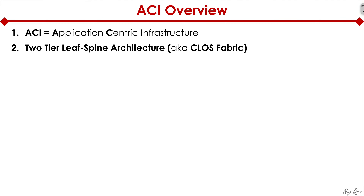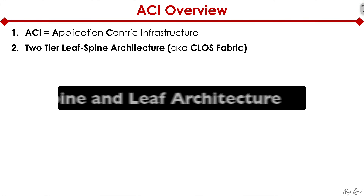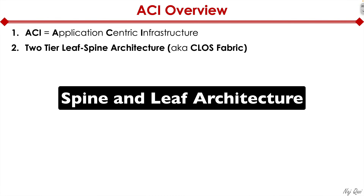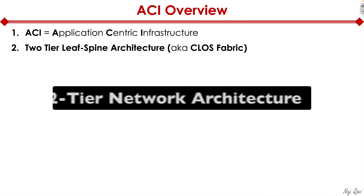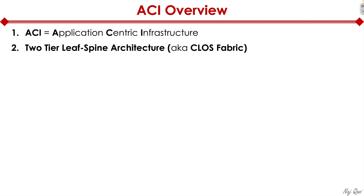Before I get into the topology of leaf-spine, from a terminology perspective, keep in mind that in some literature it could be called leaf-spine architecture, or leaf and spine architecture, or spine-leaf architecture, or simply a two-tier network architecture, or a Clos fabric. All of these terms can be used interchangeably — they all mean the same thing. Do not get confused as you switch from one resource to another.